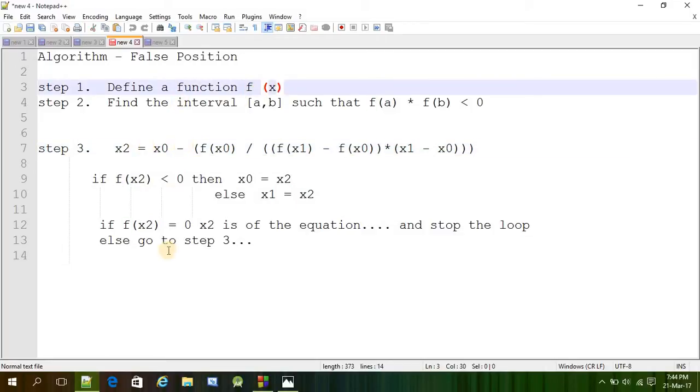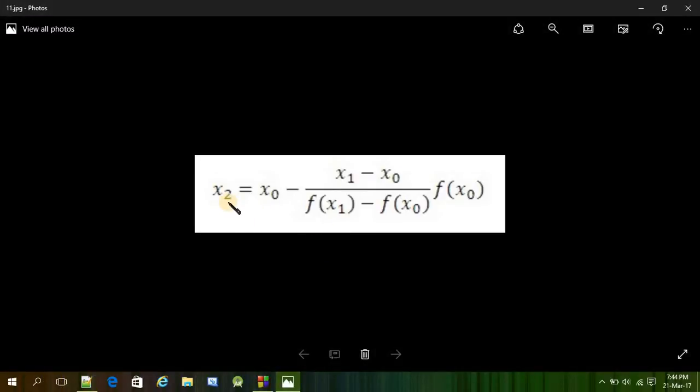The actual formula looks like this. x2 is equal to x0 minus (x1 minus x0) by (fx1 minus fx0) into fx0. That is the formula and you can go for the theorem too. But I am not going to explain the theorem now. We are just going to use this formula to find the value of x2.